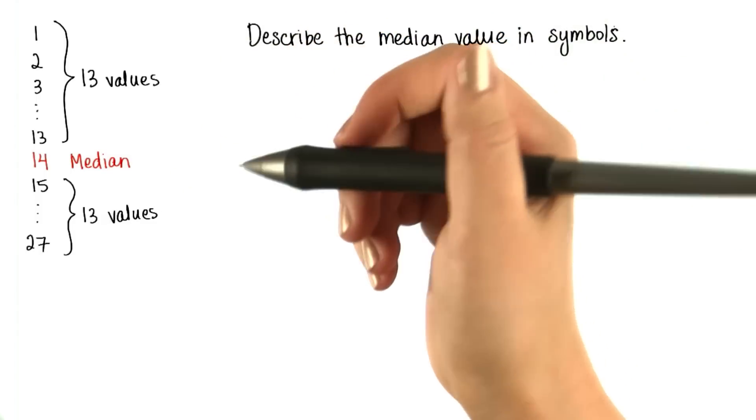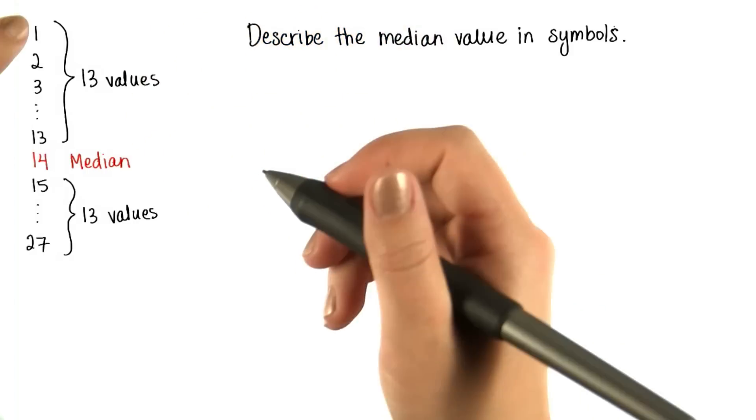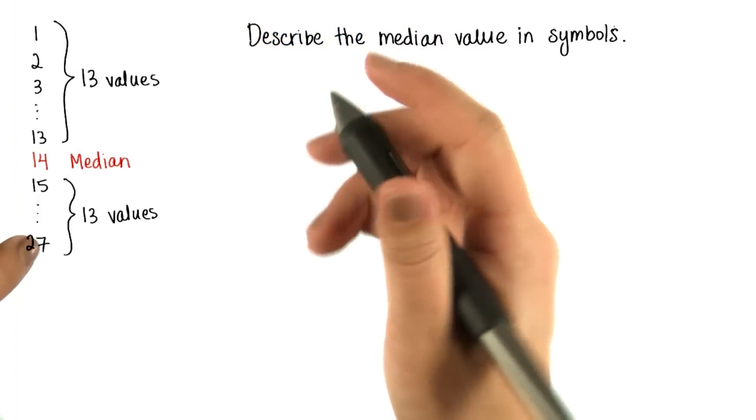Let's start first by going over some symbolic notation that we briefly mentioned earlier. Remember that these are the rankings, not the actual data values.